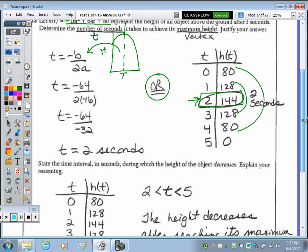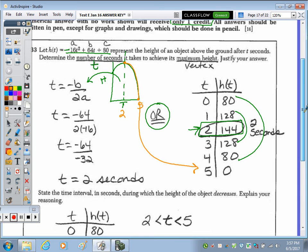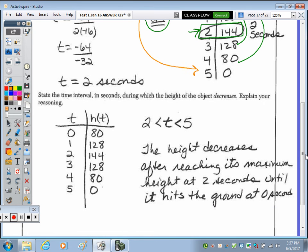State the time interval in seconds during which the height of the object decreases. So looking at the curve, the decreasing part of this function would be here to here. So we know this was at 2, and then it actually hits based on the table at 5. So it's between 2 and 5, not including 2 and 5 because that's when it reached its maximum height at 2, and then right here at 0. So between 2 and 5 is when the object decreases. So between is written here as an interval 2 < t < 5. Explain your reasoning. The height decreases after reaching its maximum height at 2 seconds until it hits the ground at 0 seconds. From here it's going down.